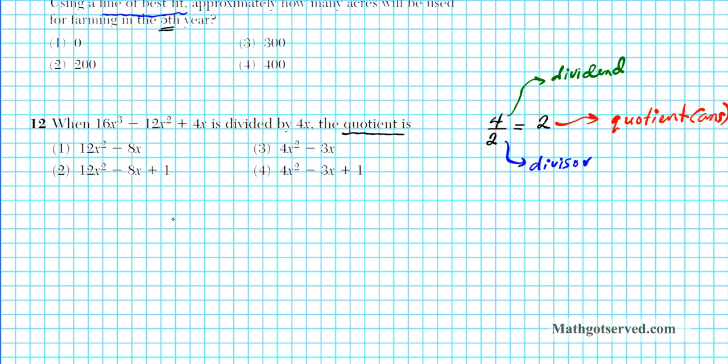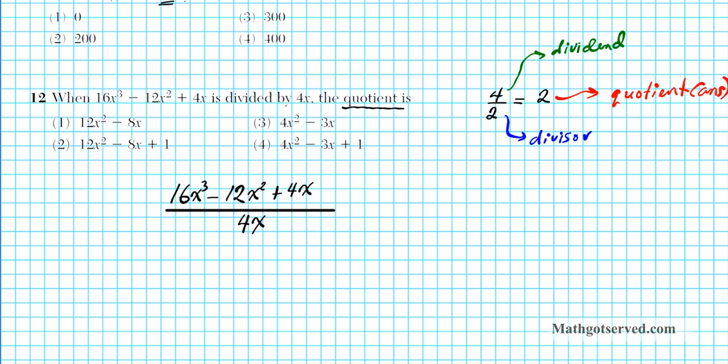So this is fancy terminology for what is the answer when you divide the numerator or the dividend by the divisor or the denominator. So let's go ahead and work this out, don't let the words confuse you. We have 16x³ - 12x² + 4x and we are dividing this entire expression by 4x.